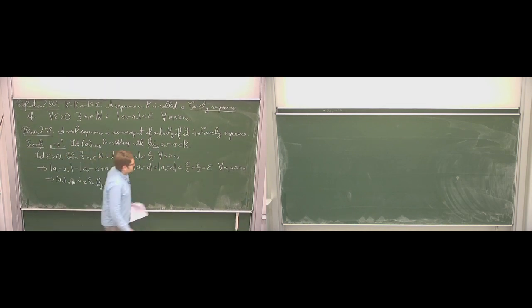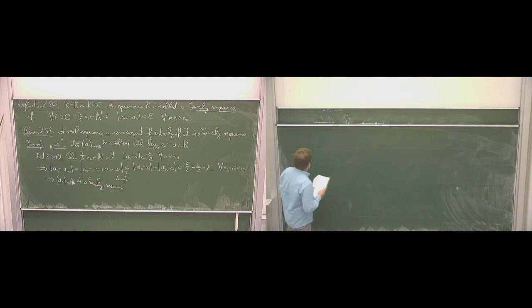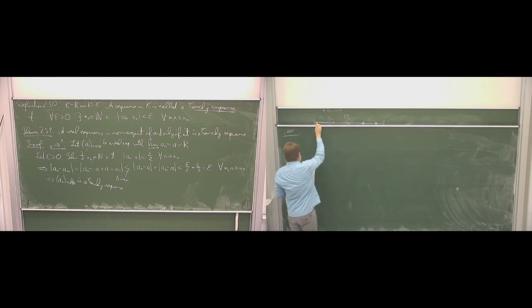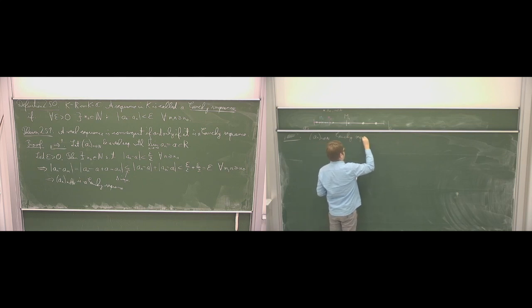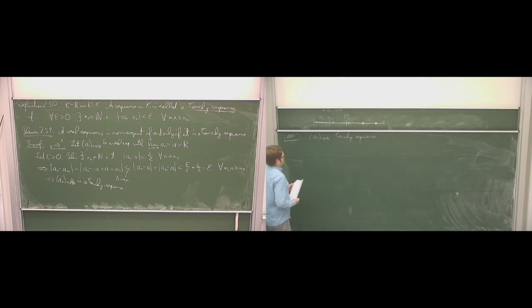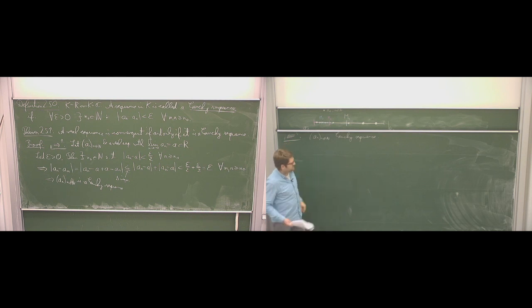For the converse — and this is the important point — we need the Bolzano-Weierstrass theorem. Let a_N be a Cauchy sequence. The idea is: we show it is bounded, then by Bolzano-Weierstrass we get a convergent subsequence, and then the convergent subsequence combined with the Cauchy property implies convergence of the whole sequence. First, we need an upper bound. We take epsilon equal to 1: there exists an N₀ in ℕ such that |a_N − a_{N₀}| < 1 for all N bigger than or equal to N₀.